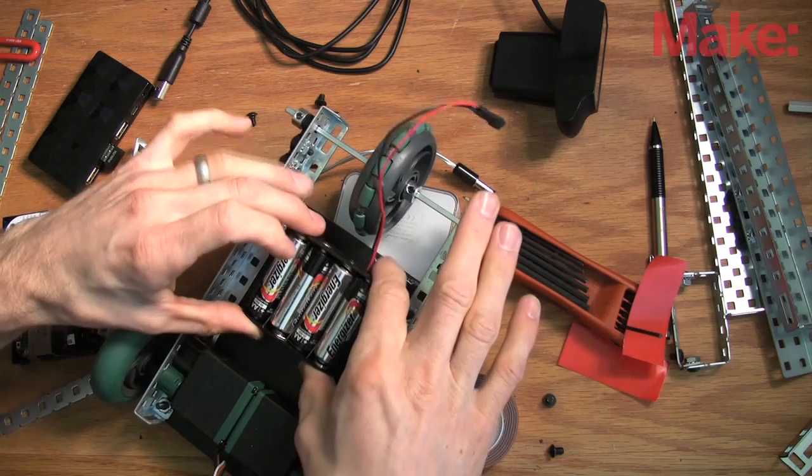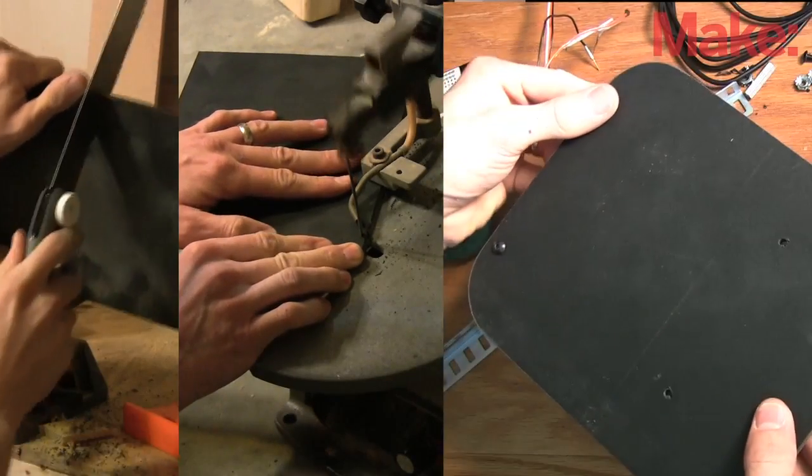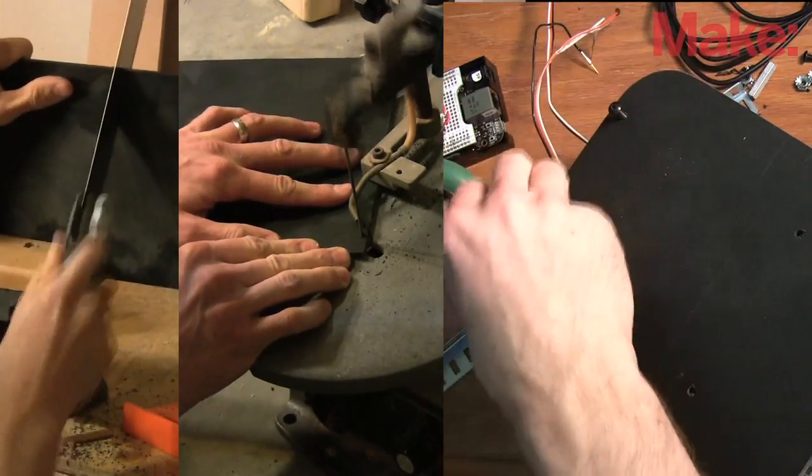The electrically noisy servos will have their own battery pack. I used recycled sheets of PVC for decking. The quarter-inch stuff is quite strong for its weight.